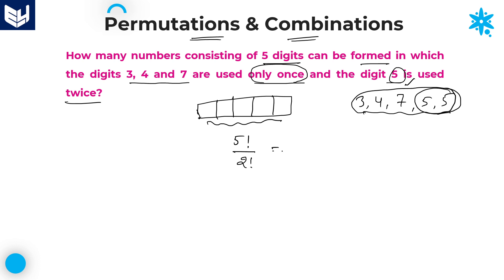So first, calculate 5 factorial. 5 factorial is equal to 120, divided by 2 factorial which is 2. Therefore, the required answer is 60. We can form 60 numbers using the digits 3, 4, 7 only once and the digit 5 twice. 60 is the right answer for this question.